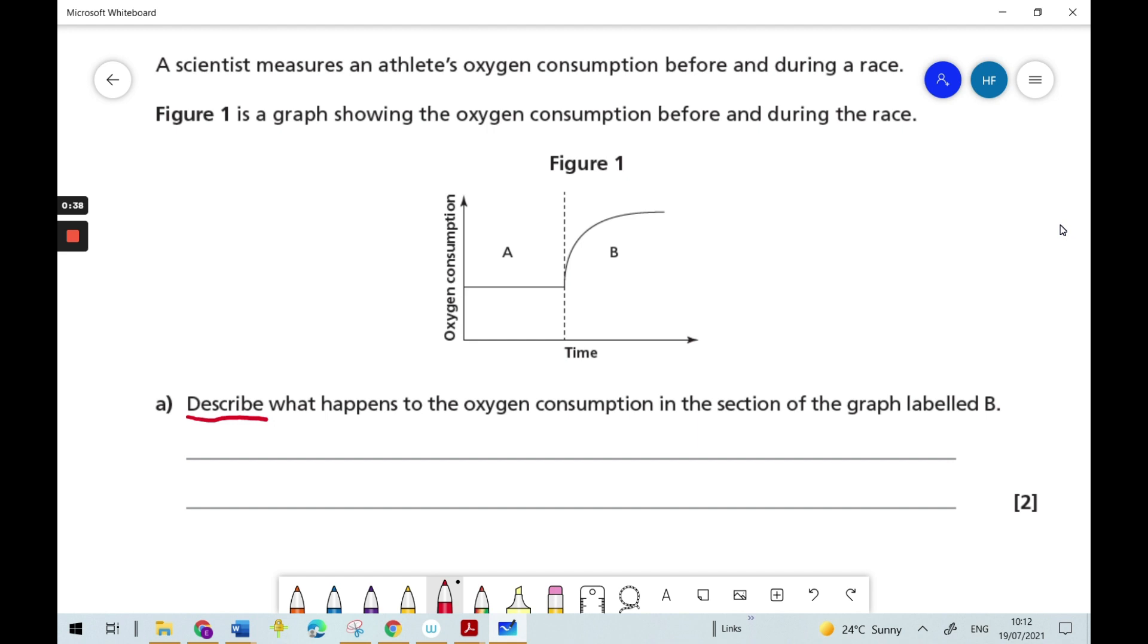In this question, because it's the word describe, you're being asked to give an account of the changes you see in the graph. Let's look at what other important information the question gives us. We are told that the scientist is measuring oxygen consumption. What's that? Well, oxygen consumption is how much oxygen the body is using for respiration in order to produce energy.